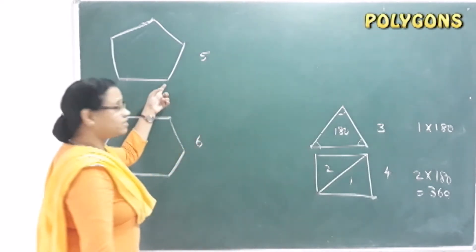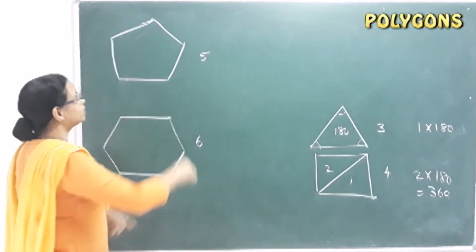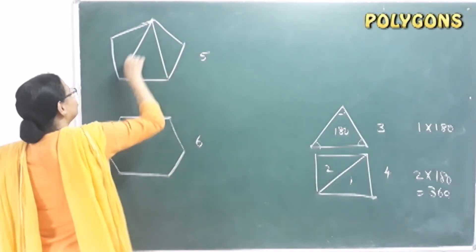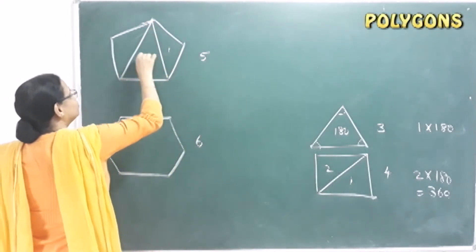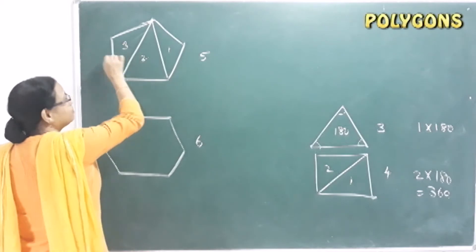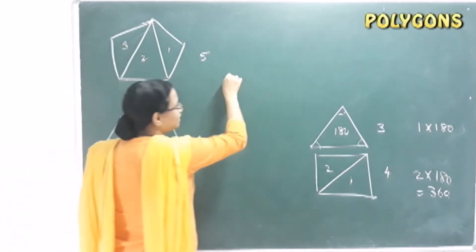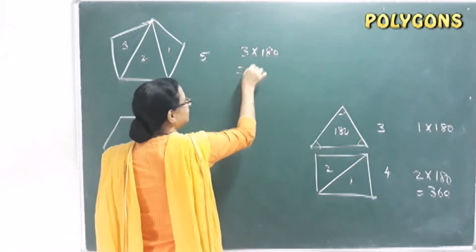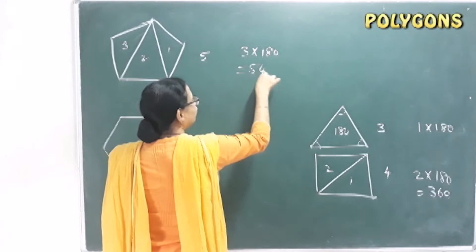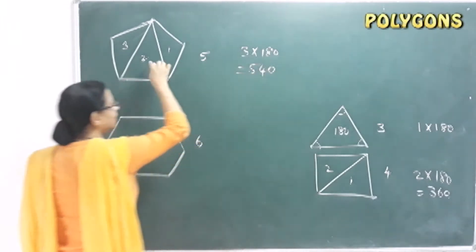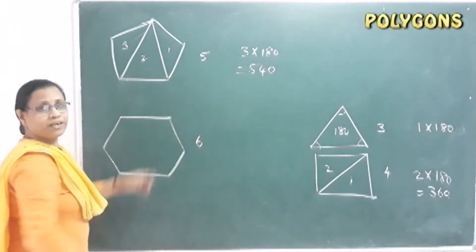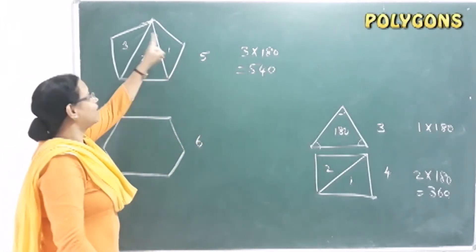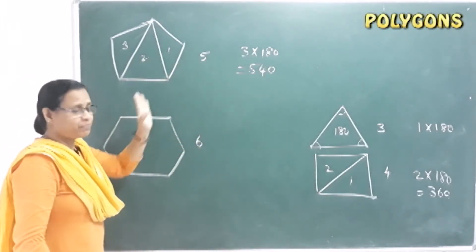Two triangles give 360 degrees. With three triangles — 3 × 180 degrees — that equals 540 degrees. That means the sum of the interior angles of a pentagon equals 540 degrees.